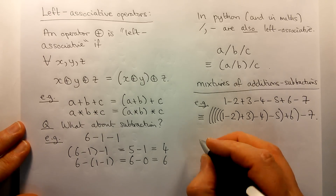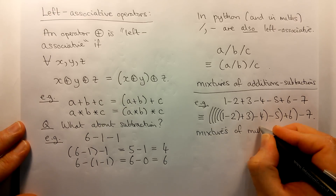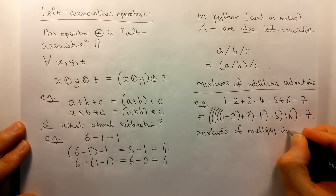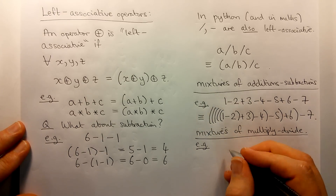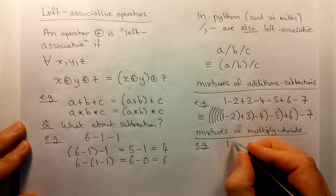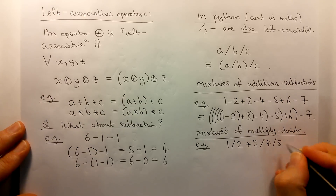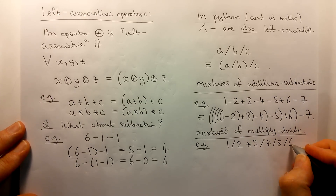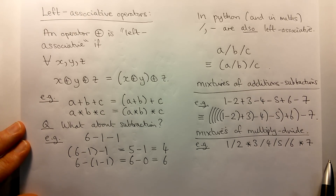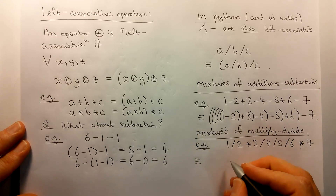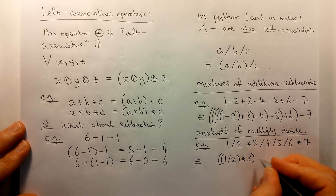The same is true if we have mixtures of multiplication and division. If we had a mixed expression involving multiplications and divisions and no other operations, then again we simply work conventionally from left to right. Let me rewrite this with some brackets to make the structure clear: we perform the leftmost operation, then move steadily across to the right, performing each new operation one after the other.